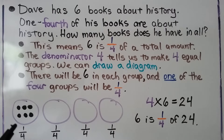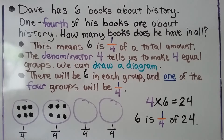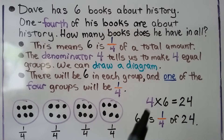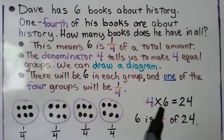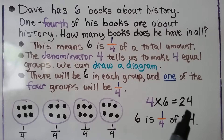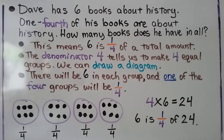6 is one-fourth, so we draw 6 counters in each group because they're equal groups. We have 6 in each of the 4 groups. We have 4 groups of 6 — 4 times 6 — and that's equal to 24. So we know 6 is one-fourth of 24.